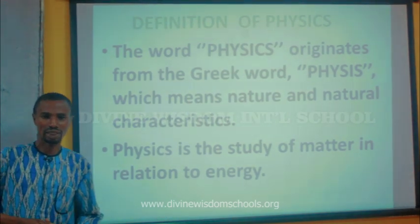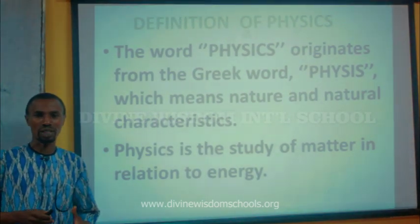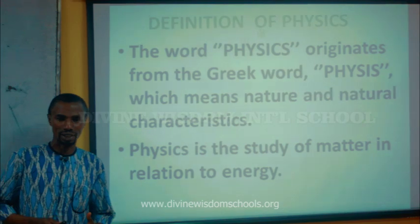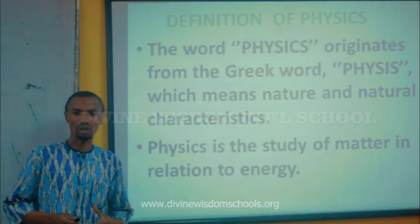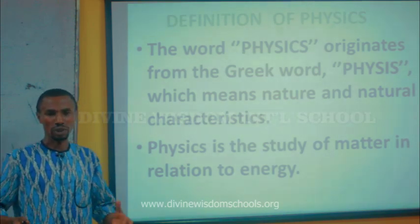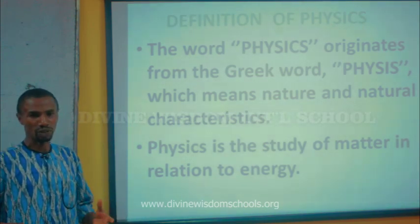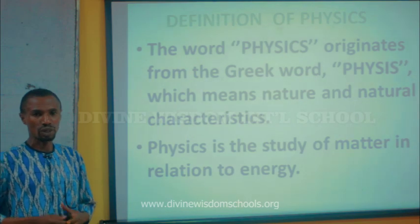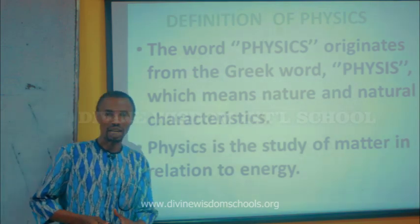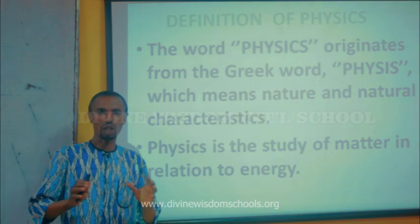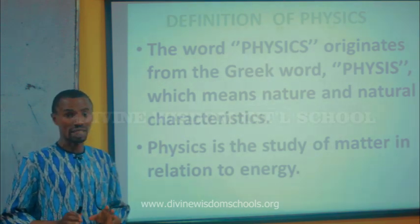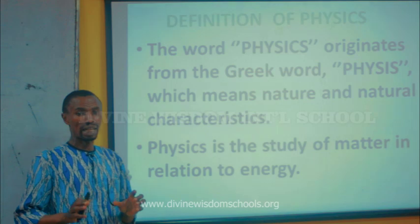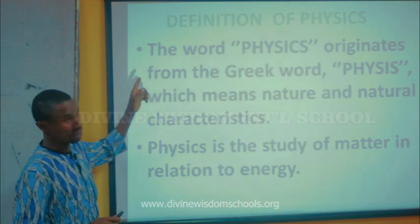In your previous classes — when you were in J1, J2 and J3 — you were taught basic science. And in basic science, a lot of topics were being taught in that subject, topics like force and energy, and so on and so forth. All of that, together with other topics you did in JSS 1 to 3 in basic science, has now culminated in the subject called physics.